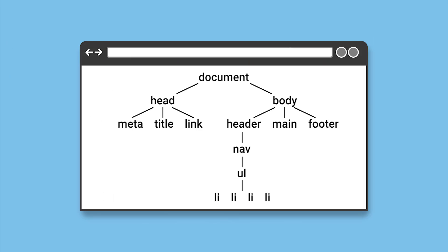For example, if you have an anchor element inside a header element, then the anchor element is going to be nested inside the header element, and the header element is going to be nested inside the body element. The body element is going to be nested inside the document element, which is the top hierarchy when it comes to the Document Object Model.